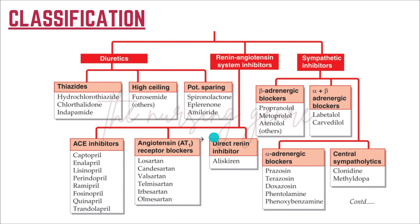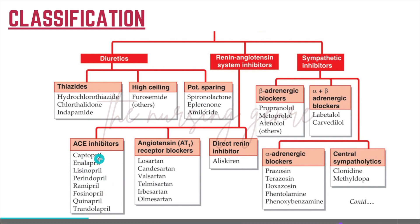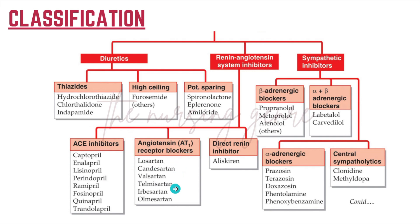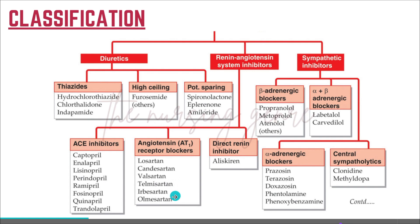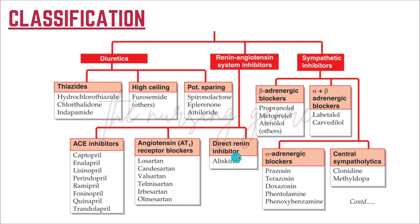Renin-angiotensin system inhibitors include ACE inhibitors — angiotensin converting enzyme inhibitors — such as captopril, enalapril, lisinopril, perindopril, and ramipril. Angiotensin receptor blockers include losartan, valsartan, olmesartan. Direct renin inhibitors include aliskiren.